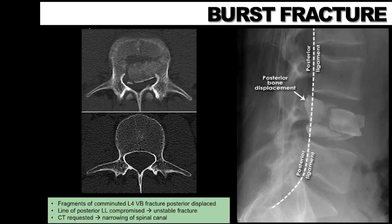The CT image demonstrates the amount of spinal canal narrowing compared to that of a normal patient. Narrowing of the spinal canal at the level of L1 or below may risk injury to the nerve roots of the cauda equina.